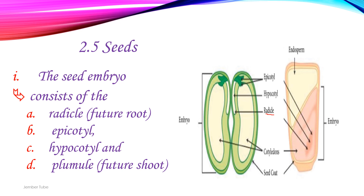The other parts are the epicotyl and the hypocotyl. The hypocotyl is the part of the stem below the cotyledon. The plumule is known as the future shoot.